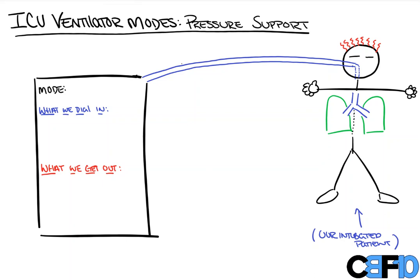We have our ventilator over here on the left side, and we're going to say that our mode is PS for pressure support. We're going to talk about what we dial in, then we're going to discuss what the machine actually does, and then what we get out as a result. The only thing we're going to dial into this is a pressure, and this is going to serve as our support.